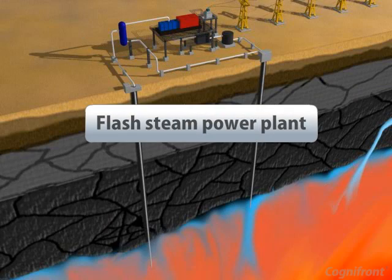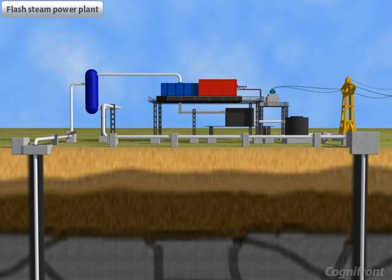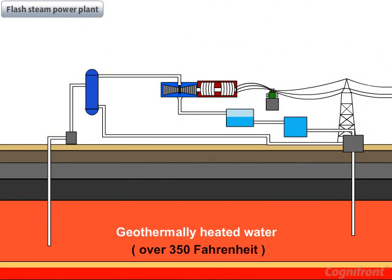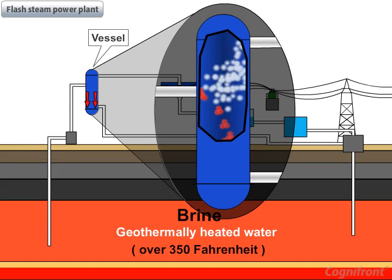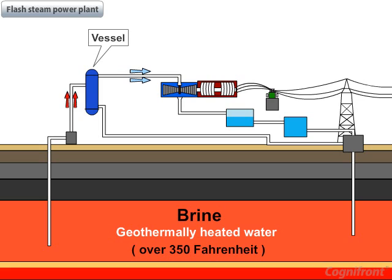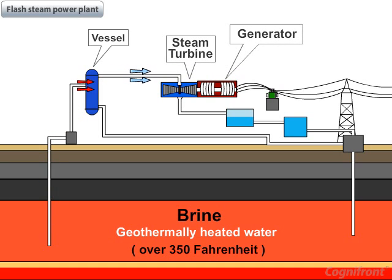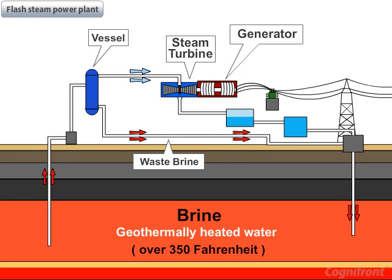The next type is the flash steam power plant. This type is used where there is an availability of geothermally heated water at a high temperature of over 350 degrees Fahrenheit. This water is called brine, and it is transferred to a vessel where steam is generated. This steam drives the turbine coupled with the generator to produce electricity. The waste brine is injected back into the earth.